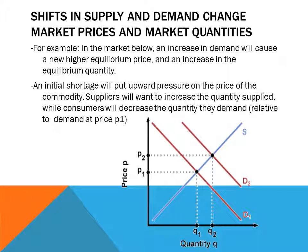Finally, we will look at how shifts in supply and demand ultimately change market prices and quantities. For example, an increase in demand will cause a new higher equilibrium price and an increase in equilibrium quantity. As the red demand curve shifts to the right — perhaps because consumer incomes are increasing — price increases from P1 to P2 and quantity increases from Q1 to Q2. An initial shortage at price P1 will put upward pressure on the price, causing suppliers to increase quantity supplied while consumers decrease quantity demanded relative to the old price.